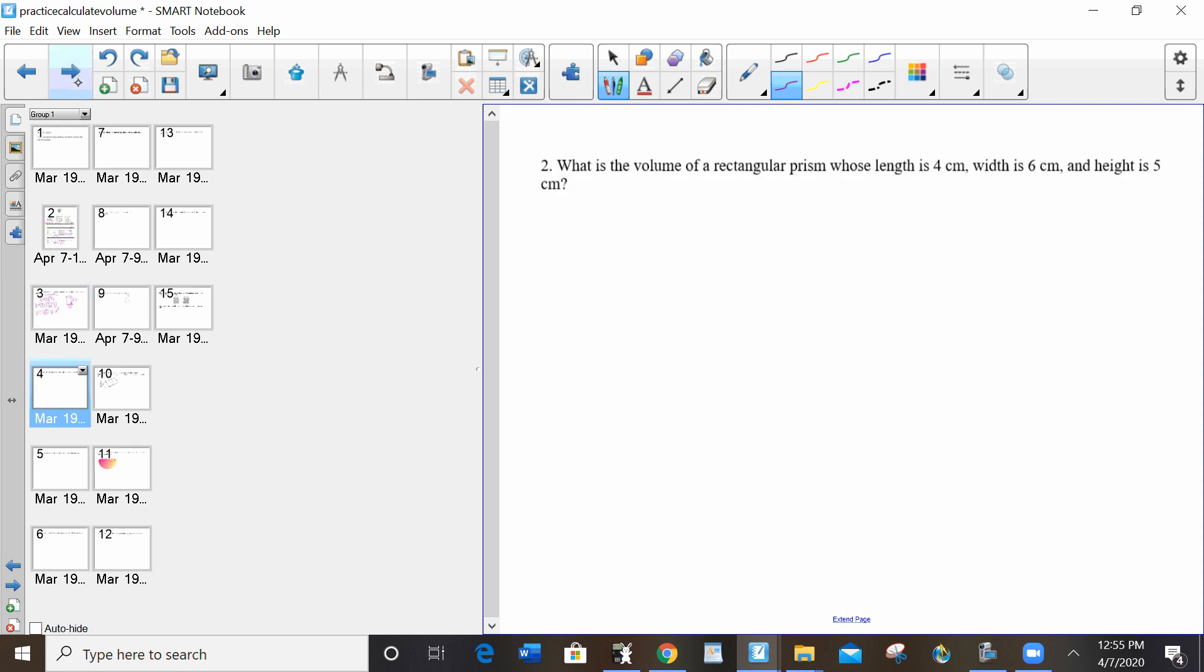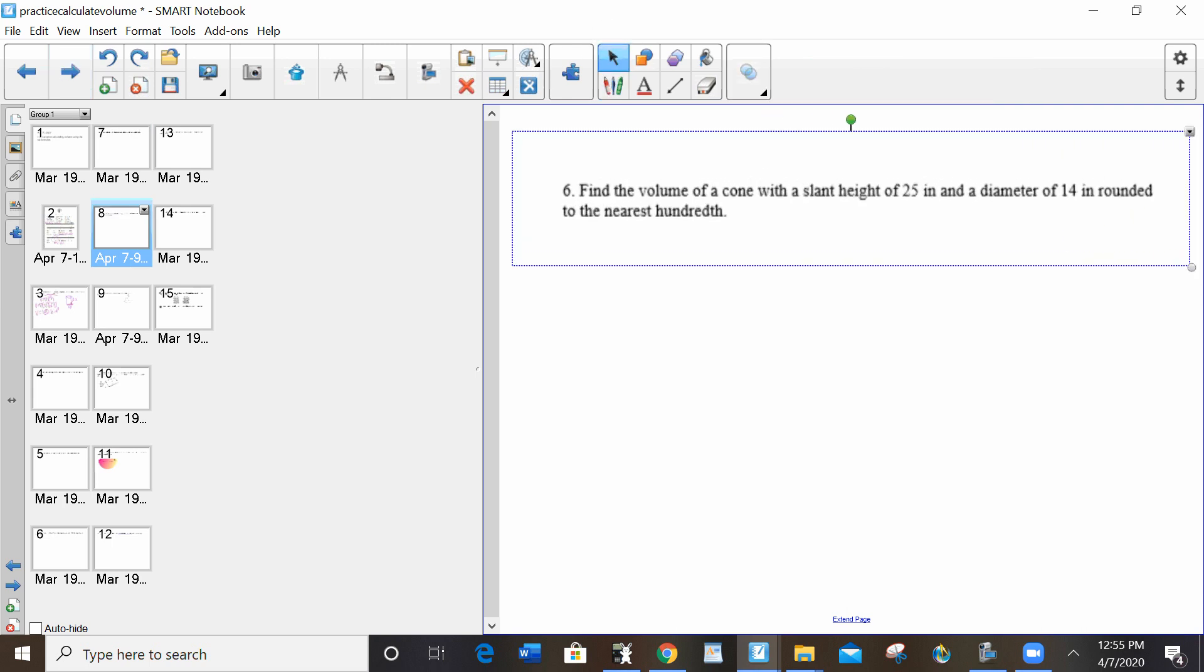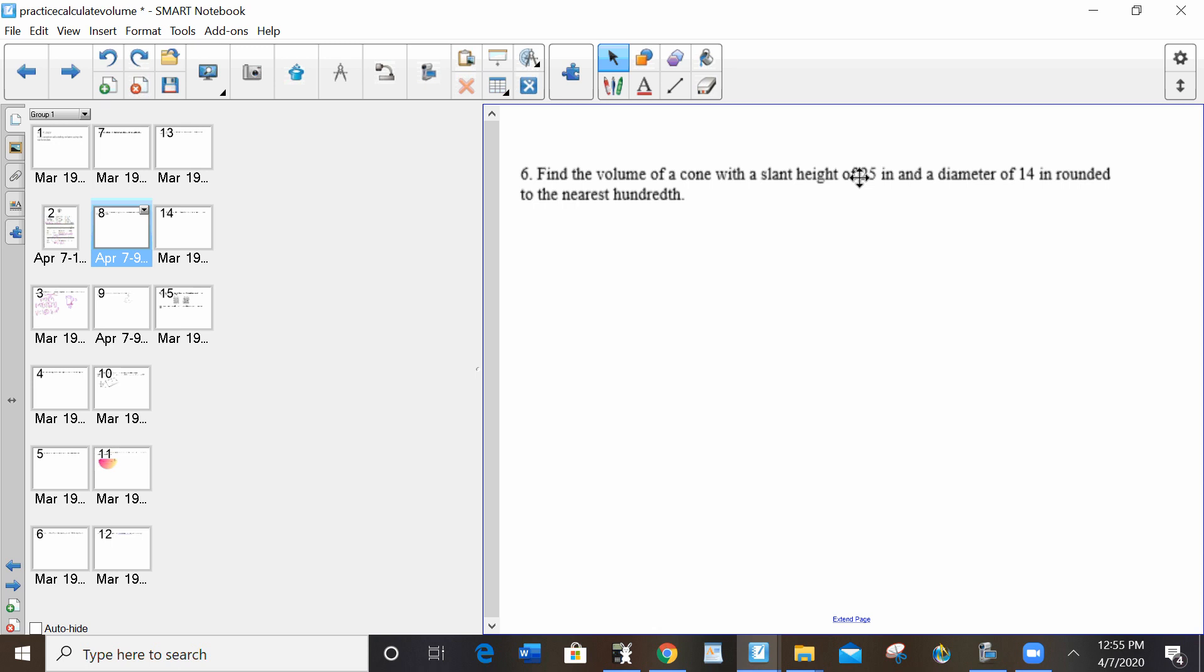Okay. I want to skip ahead to something that's going to be a little bit new. I want to take a look at number six. It's asking for the volume of a cone. So let's draw a cone. It says it has a slant height.